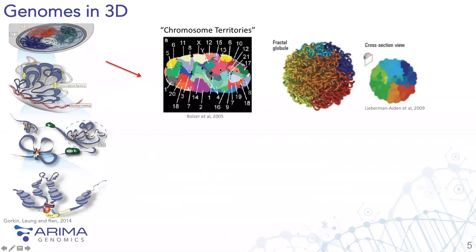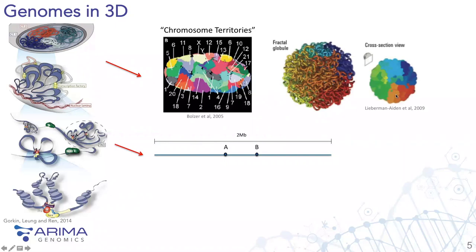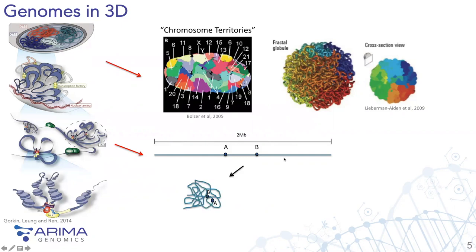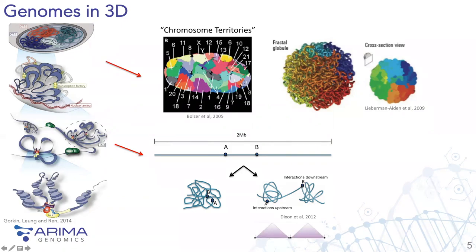This can be modeled as a fractal globule, and a cross-section through this model shows chromosomes occupying their own space. Regarding topological domains: imagine a two megabase region of your genome laid out as a linear thread with positions A and B. Rather than folding randomly into a knot where A and B might still be close together, topological domains mean A and B can actually be distal in three-dimensional space because they live in two distinct topologically associated domains, often represented as triangle structures separated by a boundary.